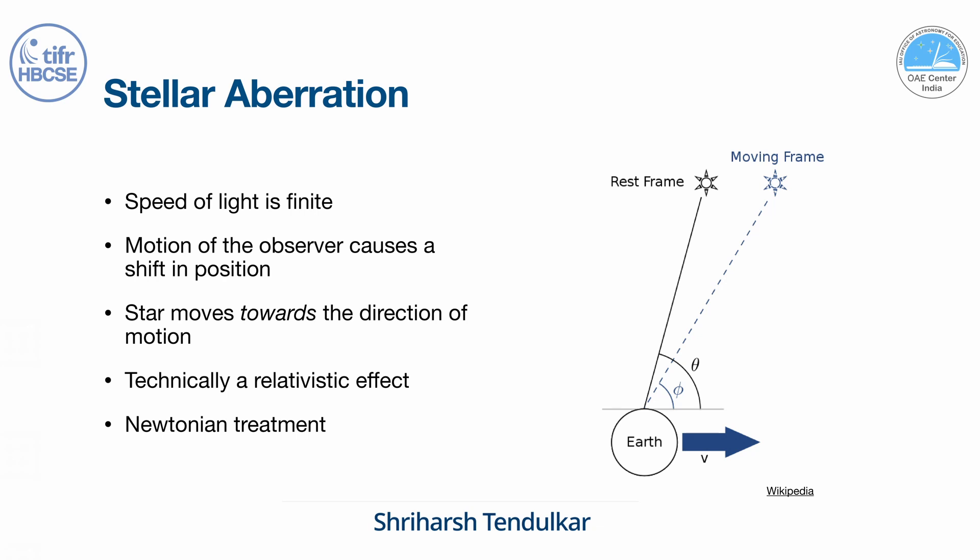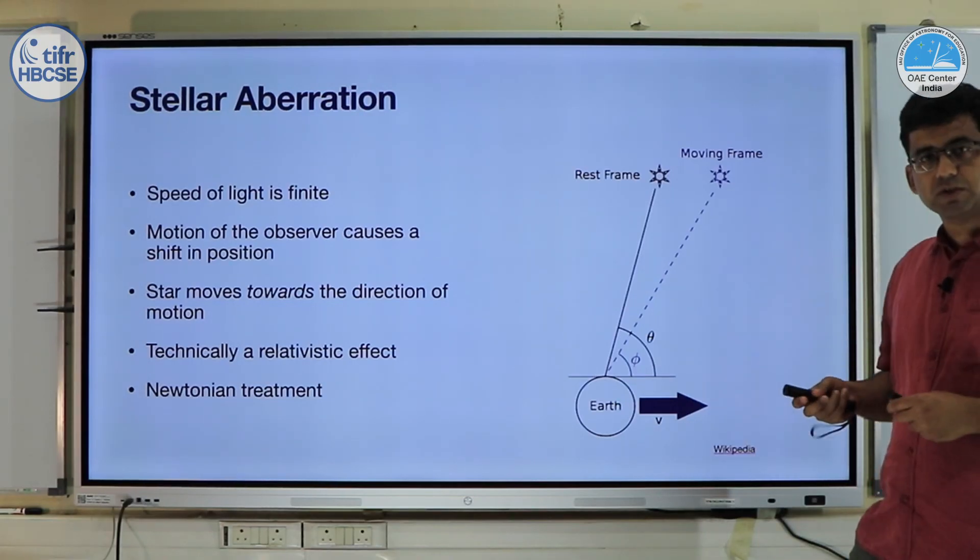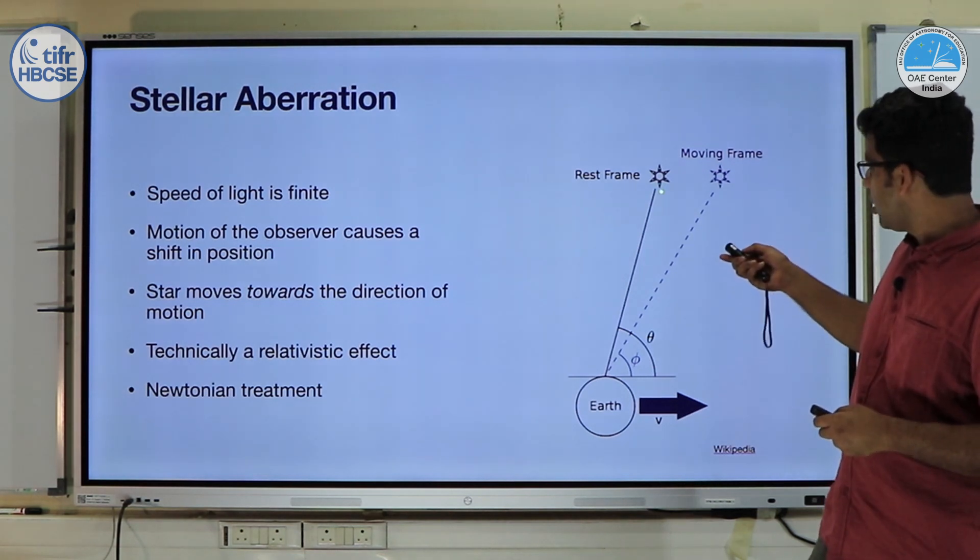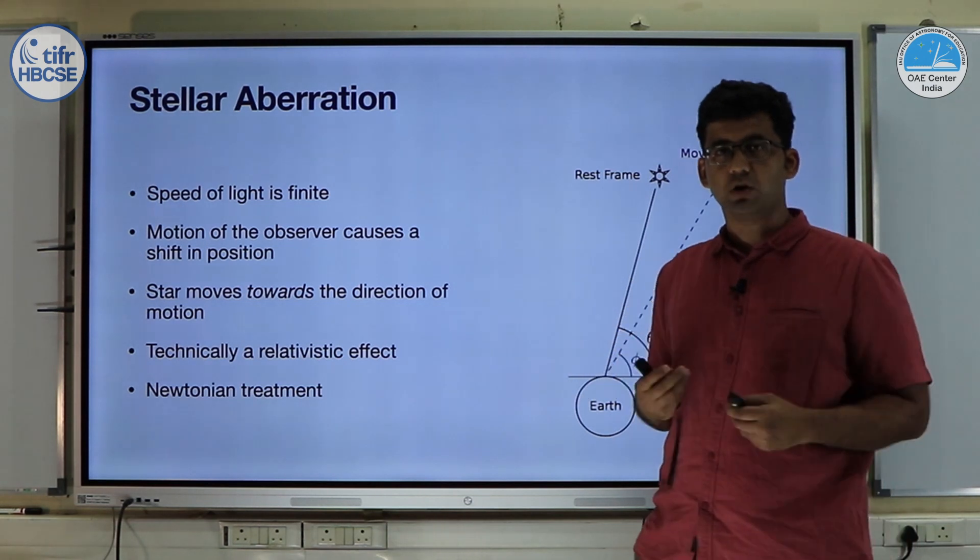We all know that the speed of light is finite and that causes a shift in the position of the stars as observed by a moving observer. So if you have an observer which is moving with some velocity v in some direction, the observed position of the star will appear to move towards the direction of motion.